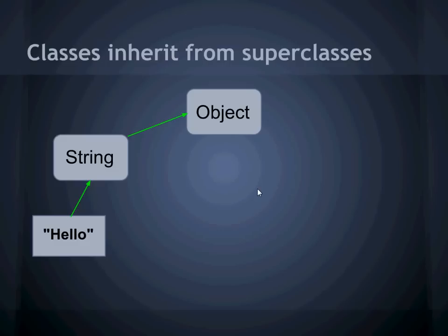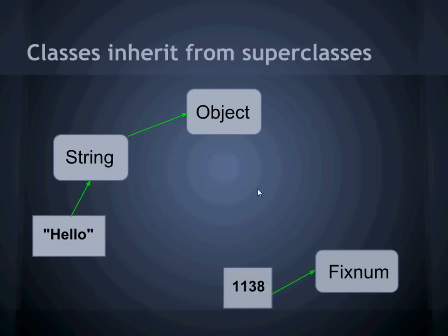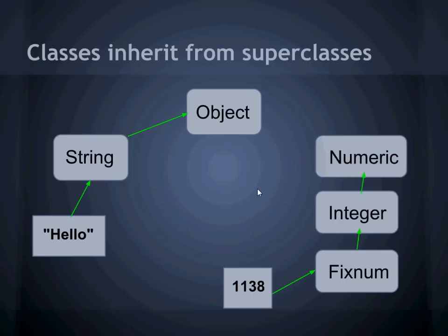As another example, a number, like 1138, is a member of class Fixnum. This is a subclass of Integer, which is a subclass of Numeric, which is also the parent class of non-integer types, like Float. Numeric's parent class is Object. So when we say that everything in Ruby is an object, we're also saying that every object is a member of a class, and every class ultimately inherits from the class Object.